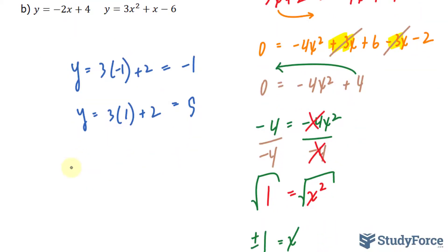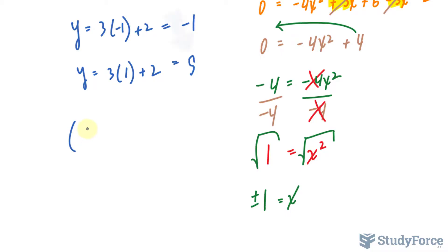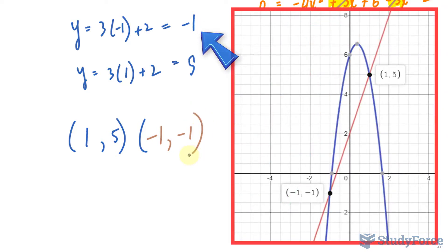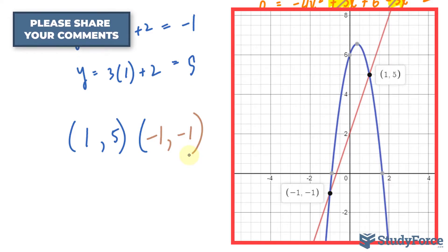Our two points of intersection are (1, 5) and (-1, -1). A graph of these two equations is shown on your screen, and notice their points of intersection match what we found algebraically.